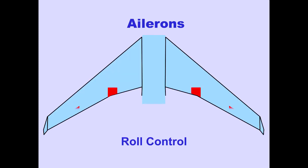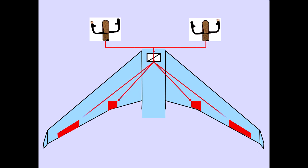Inboard and outboard ailerons provide roll control and are powered by all four hydraulic systems. Control wheel inputs are mechanically transferred to hydraulic actuators at each aileron.